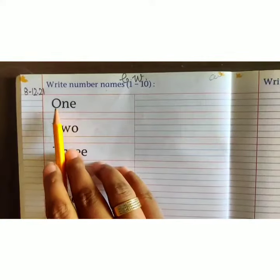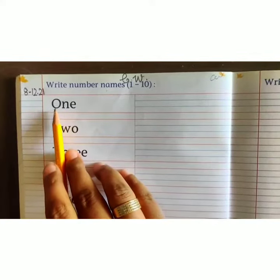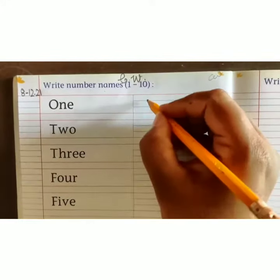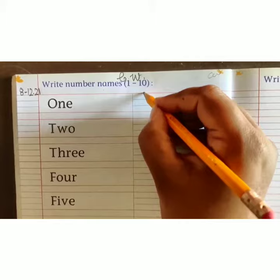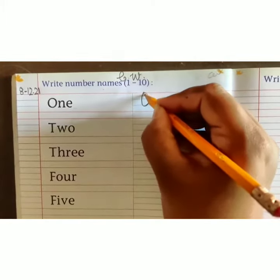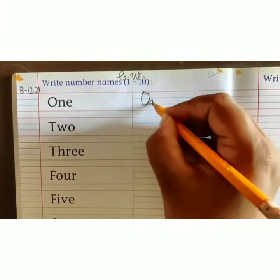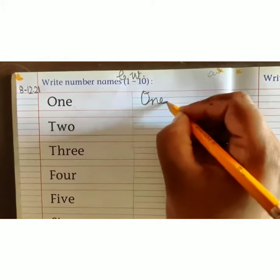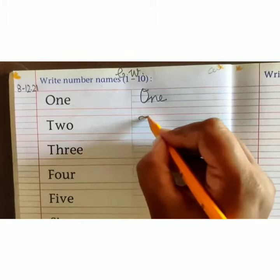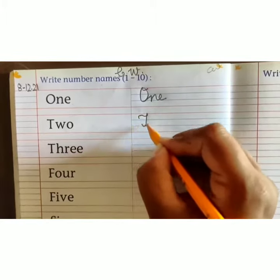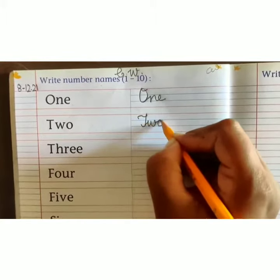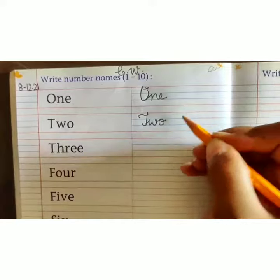Now here, this is O-N-E, 1. So you have to write here the same: O-N-E, 1. T-W-O, 2.